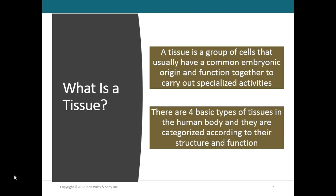A tissue is a group of cells that usually has a similar embryological origin and they're specialized for a particular function. The nature of the extracellular material that surrounds the connections between the cells of a tissue influences the structure and the properties of a specific tissue, allowing them to carry out very specialized activities.